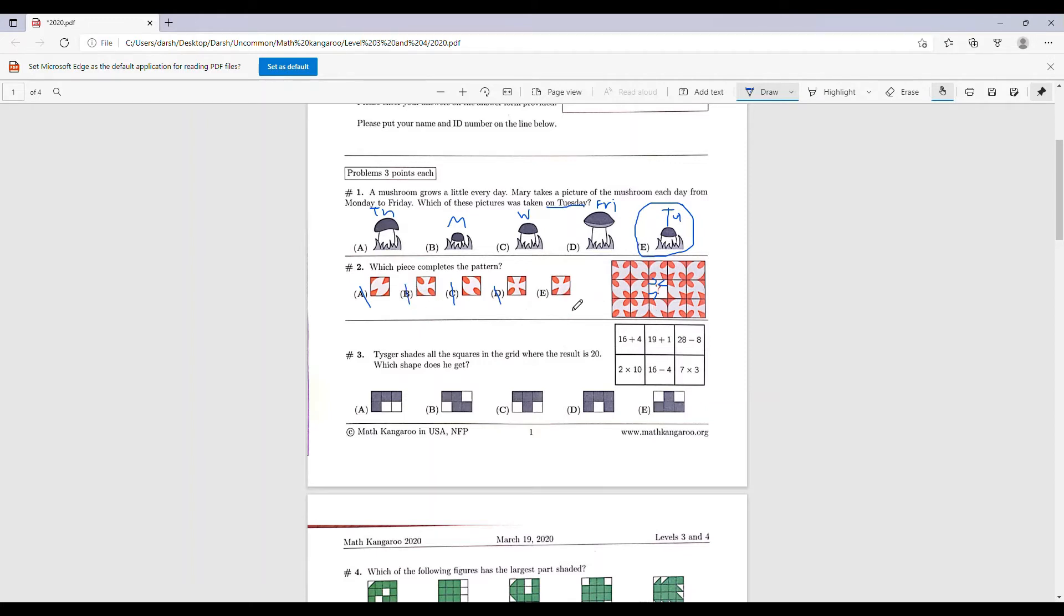But let's just confirm: does it have this sort of pattern here where it's like a triangle and then it has the top shaded? And we can see that it does. So that means the answer is E.